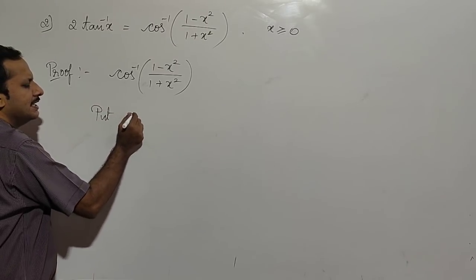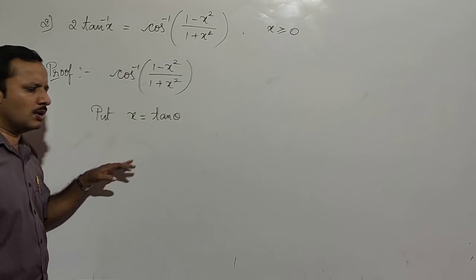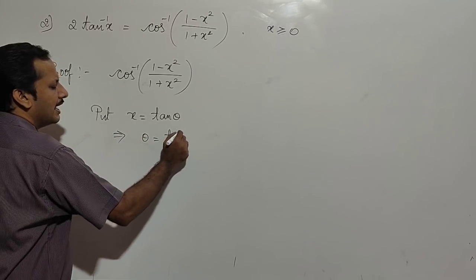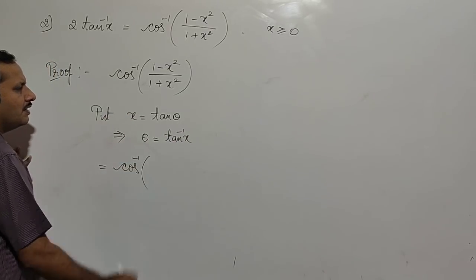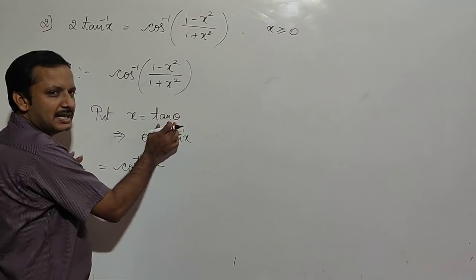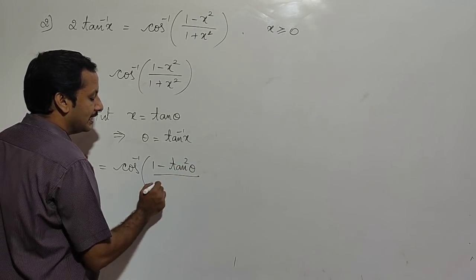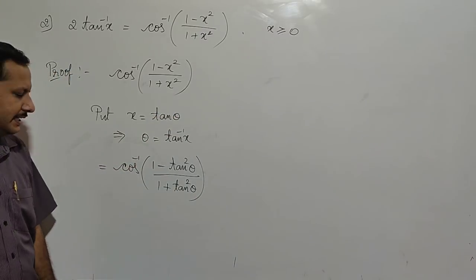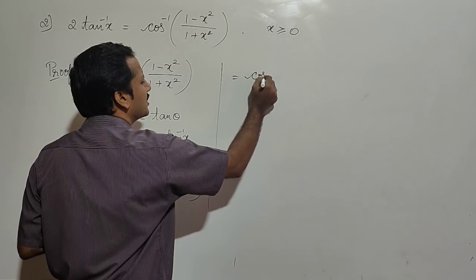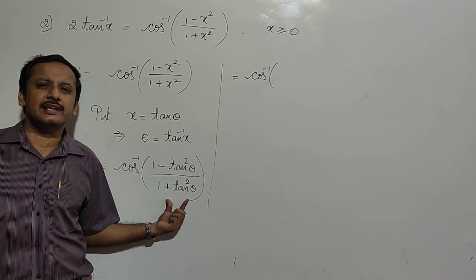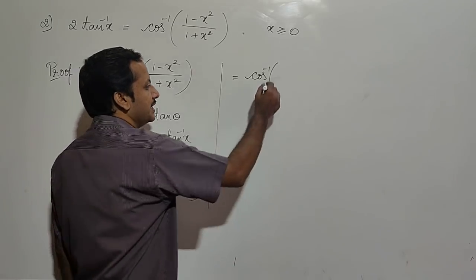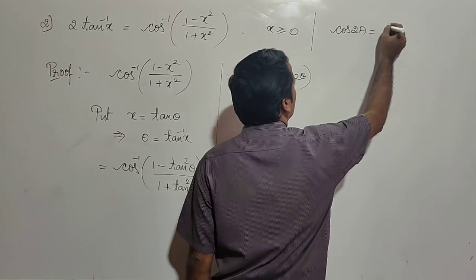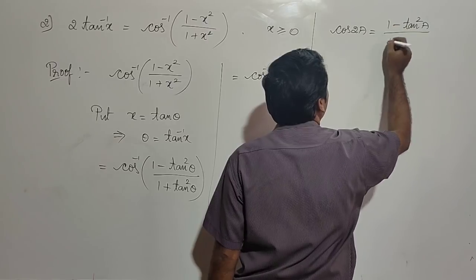Make the substitution x = tan θ, just as in the previous case. When x = tan θ, then θ = tan⁻¹(x). Substituting into the expression gives cos⁻¹((1 - tan²θ)/(1 + tan²θ)). There is a well-known formula: cos 2θ = (1 - tan²θ)/(1 + tan²θ). This is one of several formulae for cos 2θ.